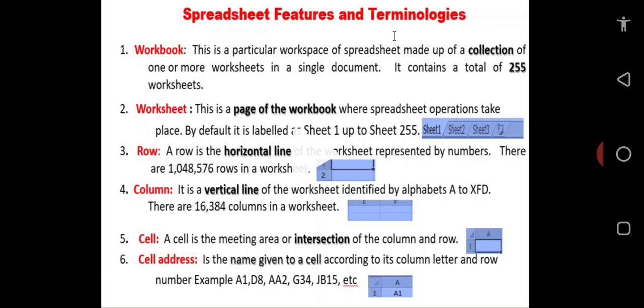Number five, a cell. A cell is the meeting point or area of intersection of a column and row.